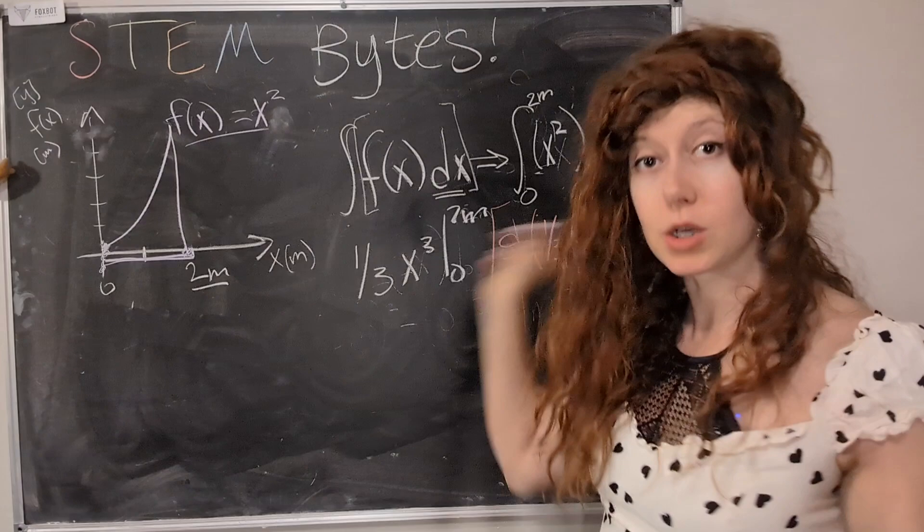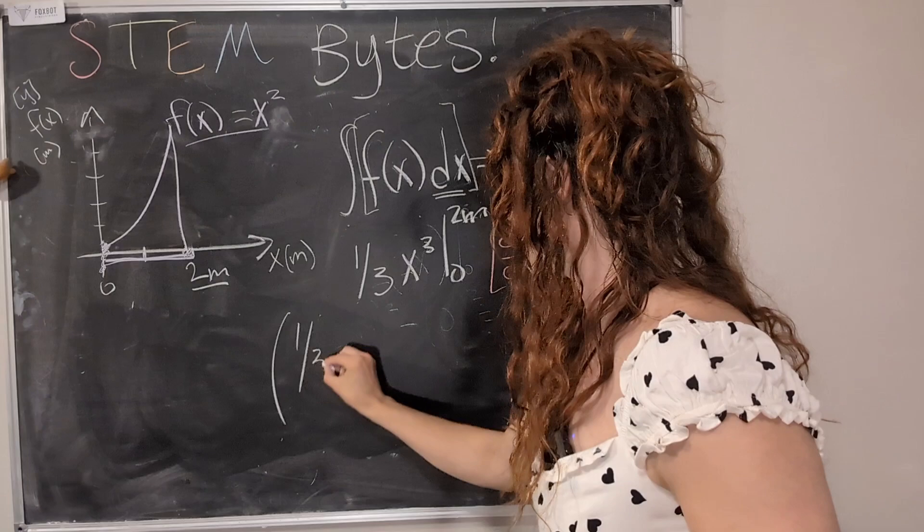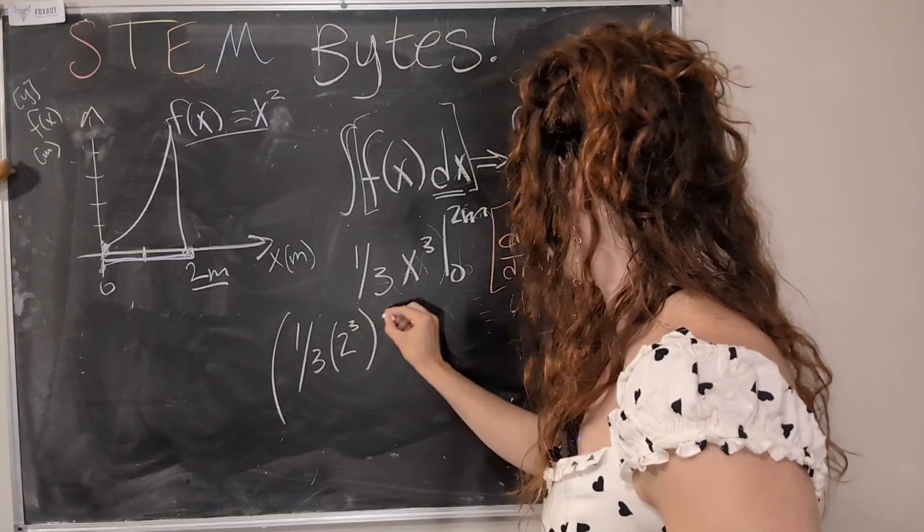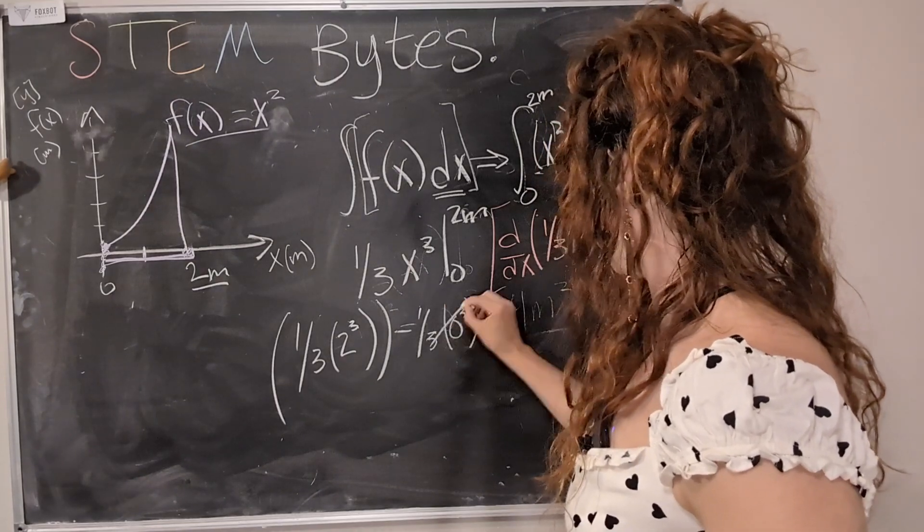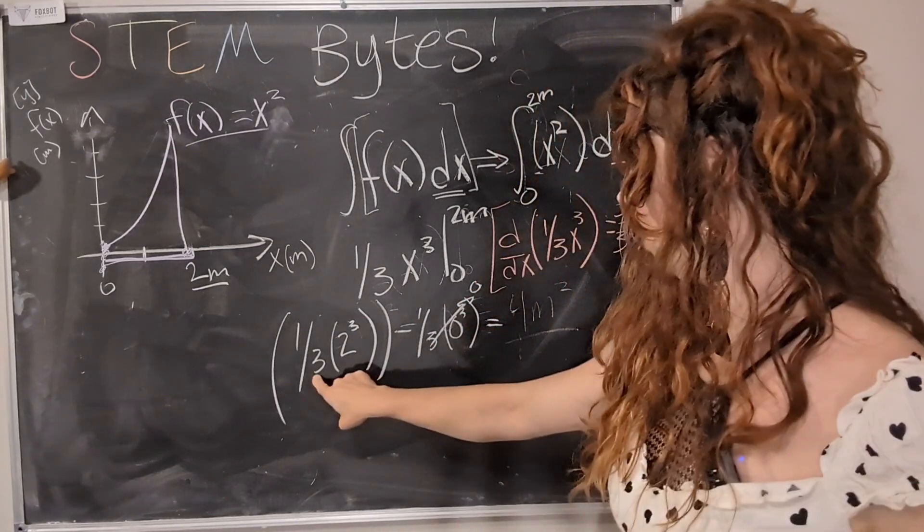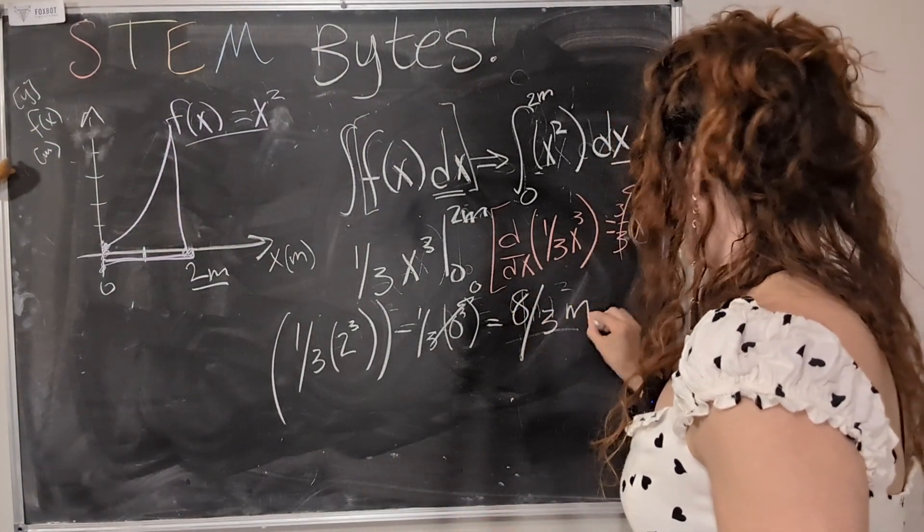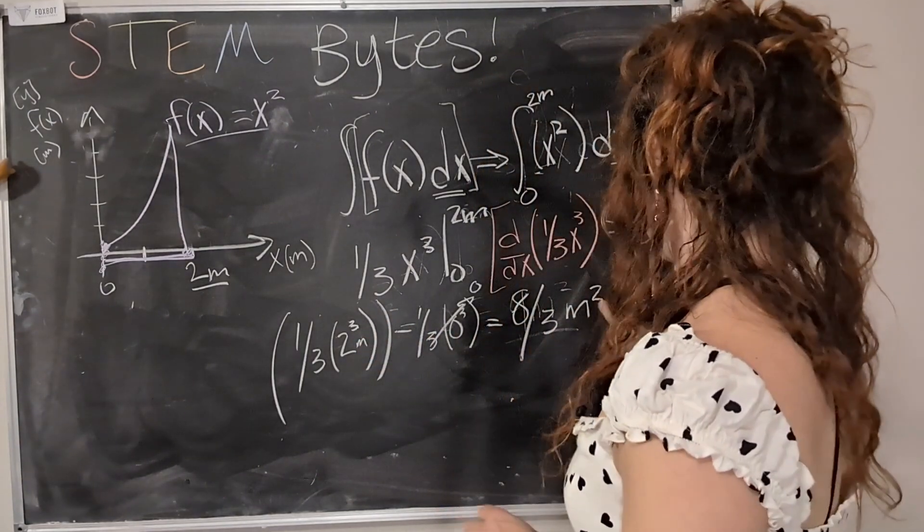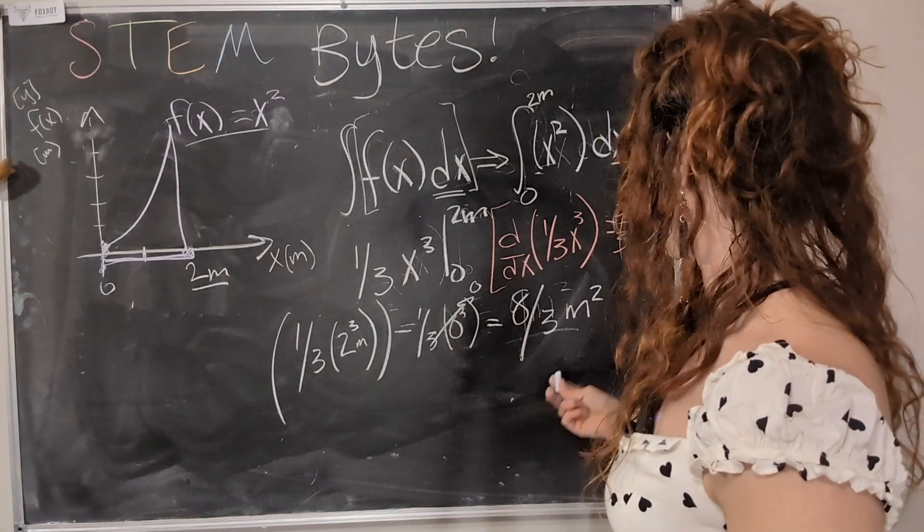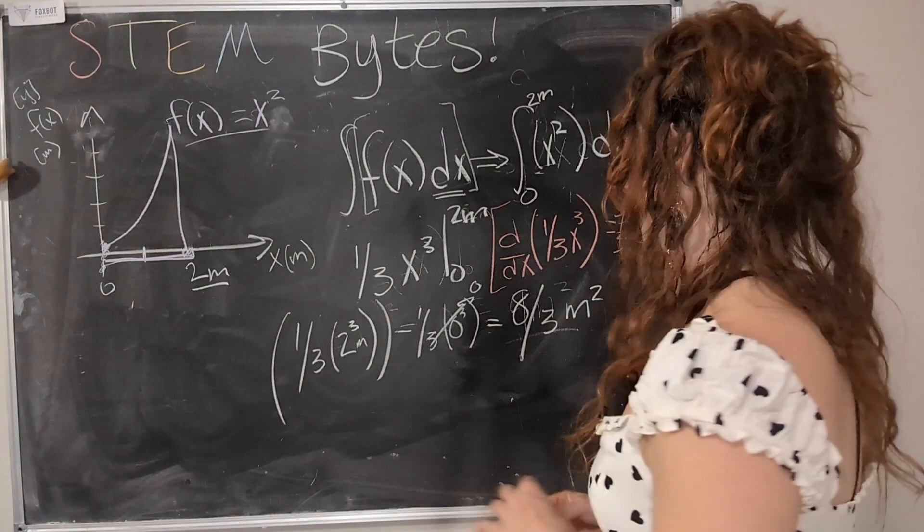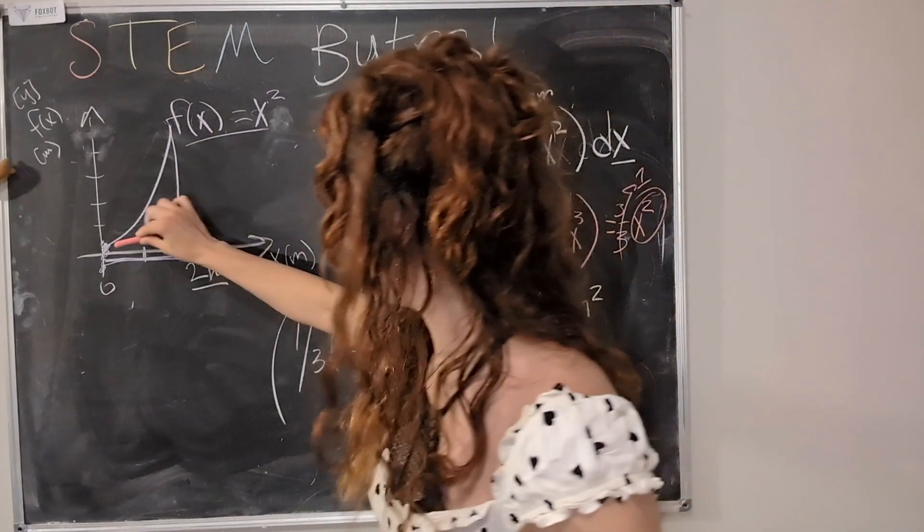Okay. So now that we've checked that our integral was right. Now we can apply the numbers. And so we go one third times two cubed minus one third times zero cubed. This just goes to zero. And this is going to equal one third times two cubed, which is eight. So this is going to be eight thirds meters squared. Oops, this should be meters squared. Okay. We'll check my work somewhere. Okay.